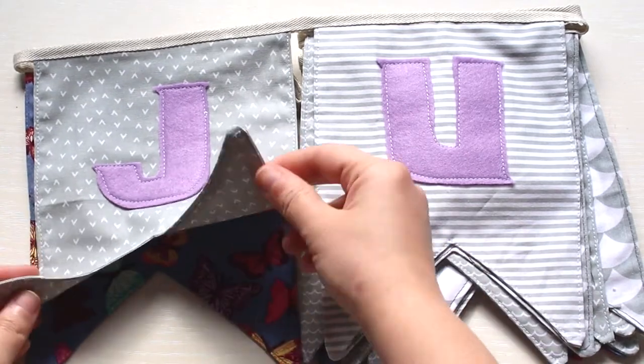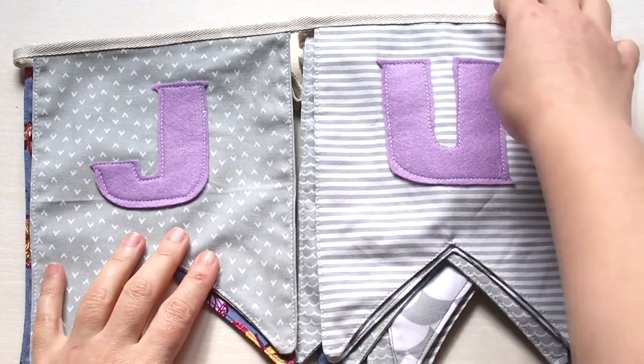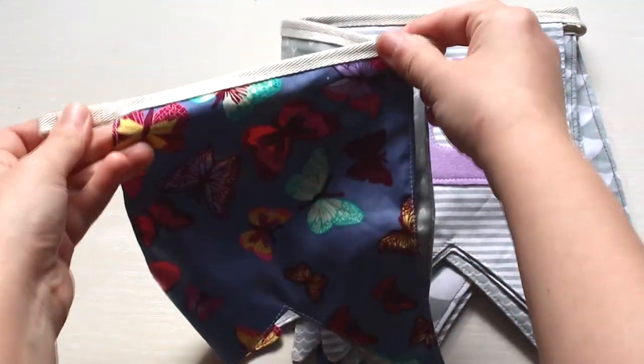This is how the bunting should look like in the end. For assembling I used a white ribbon and made a small loop on each end for hanging.